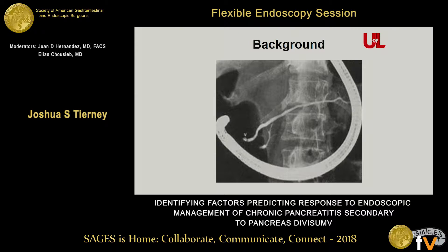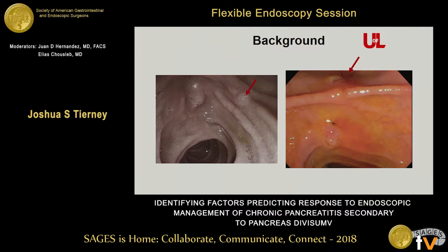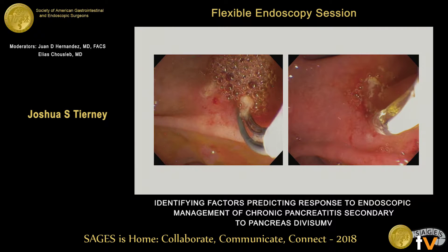Here's another image of an incomplete divisum. The red arrows mark the minor papilla. The first step is cannulating the minor papilla, which can be quite difficult as there's oftentimes a stricture right at the papilla, and then performing a minor papillotomy followed by any interventions deemed necessary. You can remove stones from the pancreatic duct using a wire-guided basket, and dilate any strictures with balloon dilation or an over-the-wire dilator.